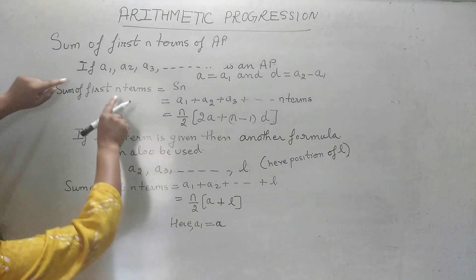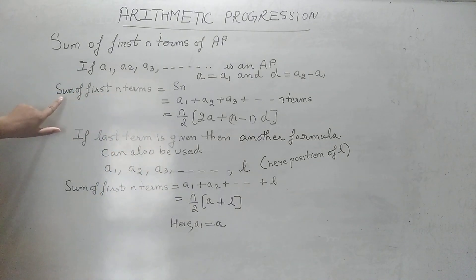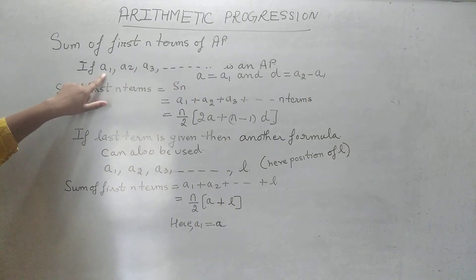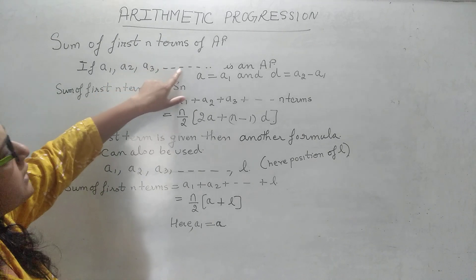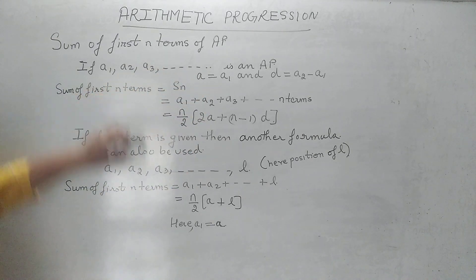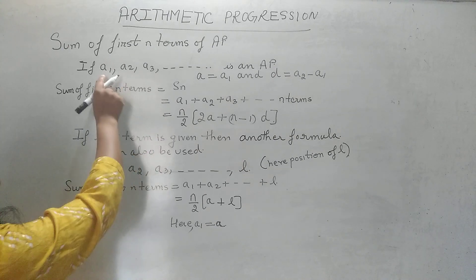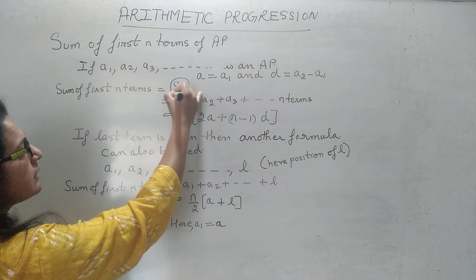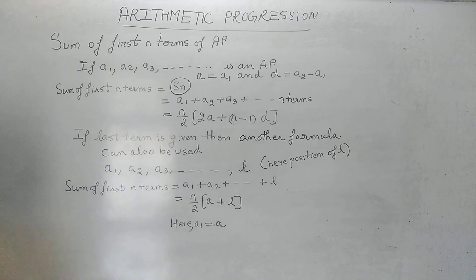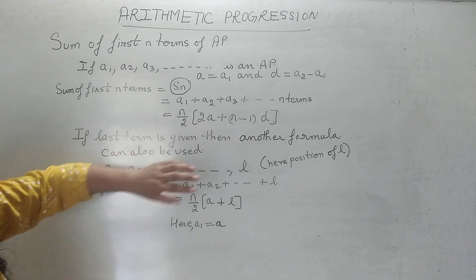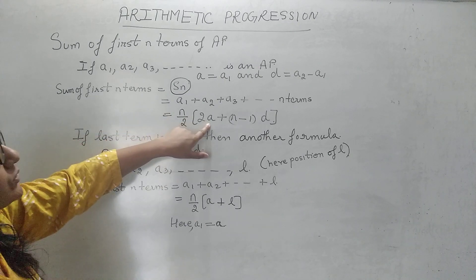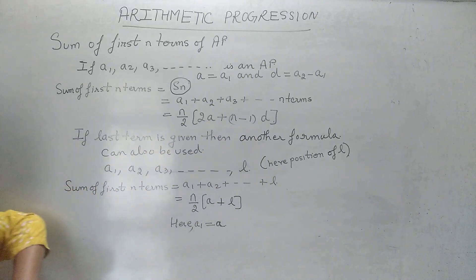For example, if n is 5, the sum of the first five terms means a1 + a2 + a3 + a4 + a5. The sum of the first n terms is represented by Sn. The formula — which you have to remember, we are not deriving it, we are directly using it — is: Sn = n/2 × [2a + (n−1)d].